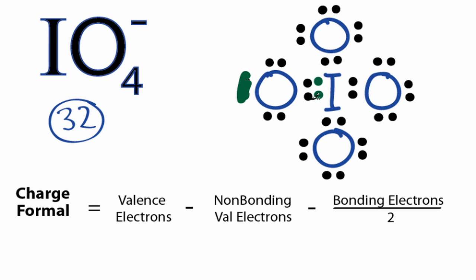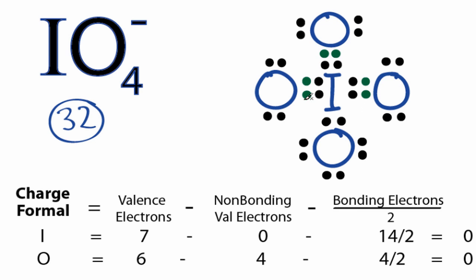If we take and form a double bond with an oxygen, that should lower the formal charge on the oxygen to 0, and also bring the formal charge on the iodine closer to 0 as well. Since we have a plus 3, let's do that to 3 of them. When we form these 3 double bonds with the oxygens here,